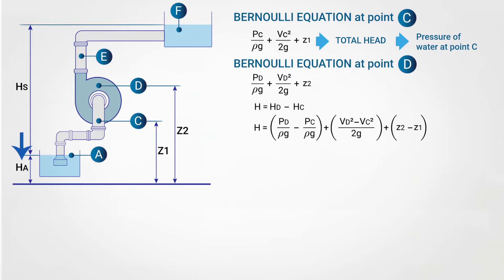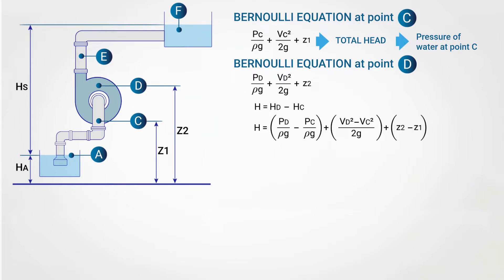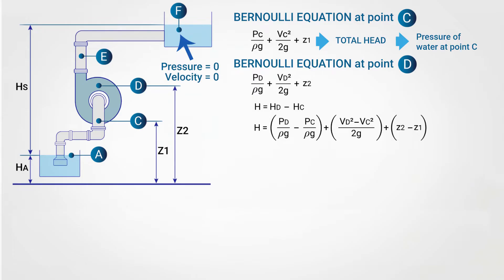The value HA represents the total head of water at point A. At this point the pressure head is zero because it is open to the atmosphere, and the velocity is also zero because the water is not moving. The distance between point A of the lower reservoir and point F of the upper reservoir is HS, known as the static head. At point F, the water is also open to the atmosphere so its pressure head is zero. The total height H in this case is HA plus HS.